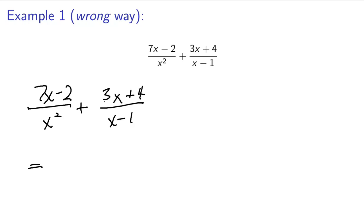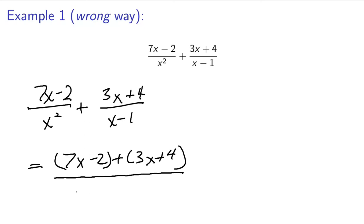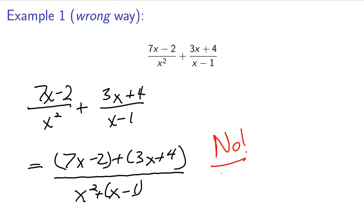So the wrong way to do this is to say: okay, we add the top and we add the bottom. So you'd have 7x minus 2 plus 3x plus 4 over x squared minus 1. This is the wrong way to do it. Definitely be sure that you do not do that, because you need to have the same denominator before you can add them together. Here we just added across — you don't do it that way.